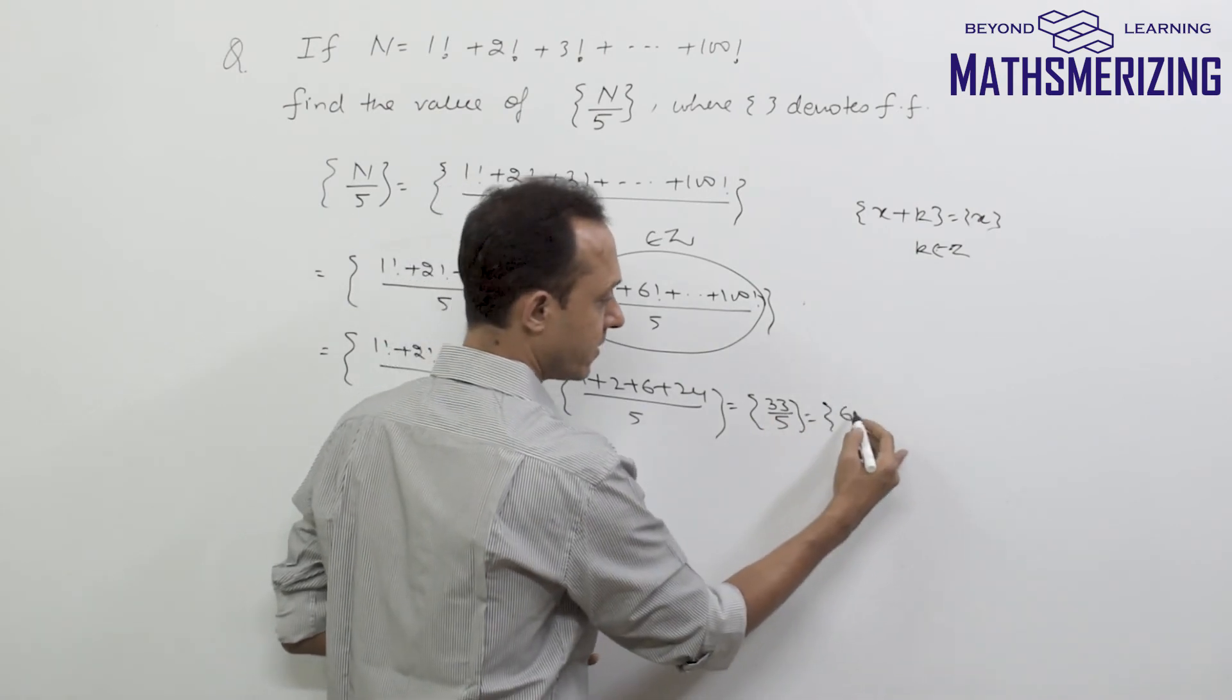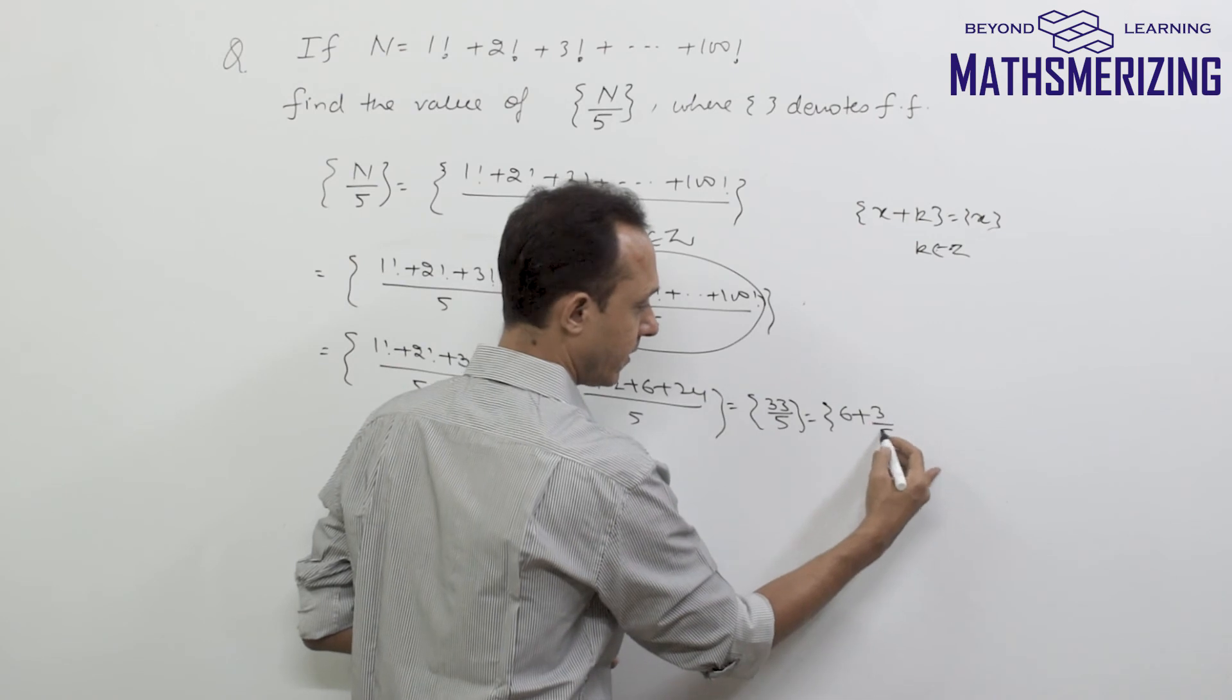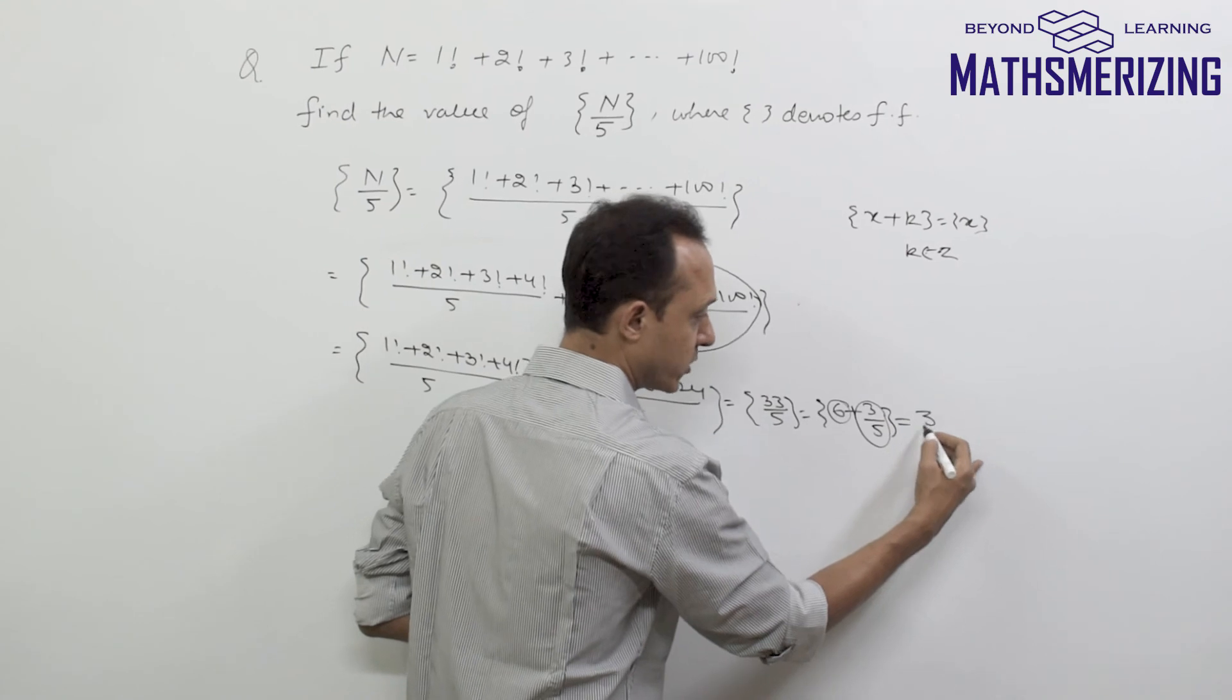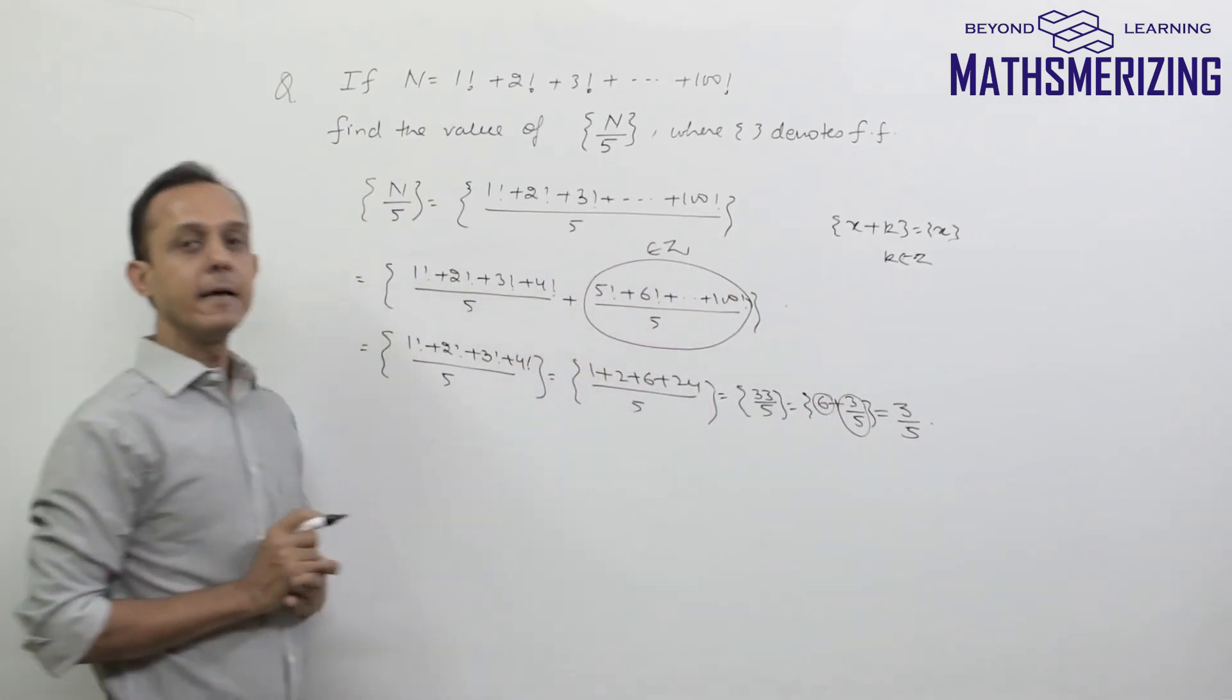When 33 is divided by 5, this is 6 plus 3 by 5. Now its integral part is 6 and its fractional part is 3 by 5, so the answer to this question is simply 3 by 5.